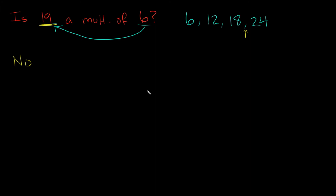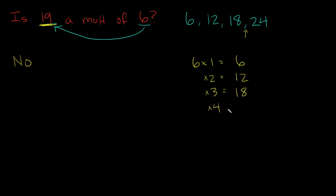We can check that with the multiplication method too: six times one is six, six times two is twelve, six times three is eighteen, six times four is twenty-four. Whenever we multiply six by a whole number, we never land on nineteen — it falls between eighteen and twenty-four.